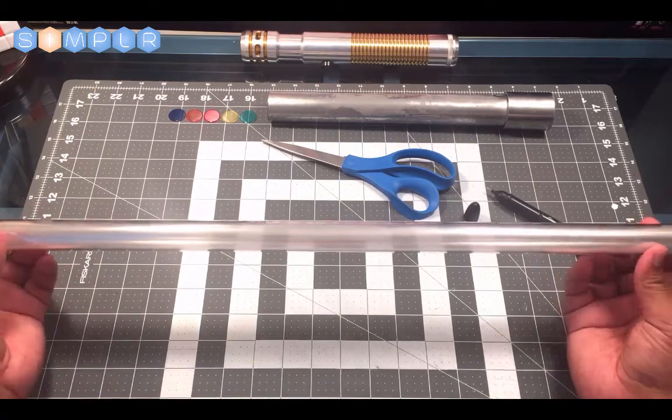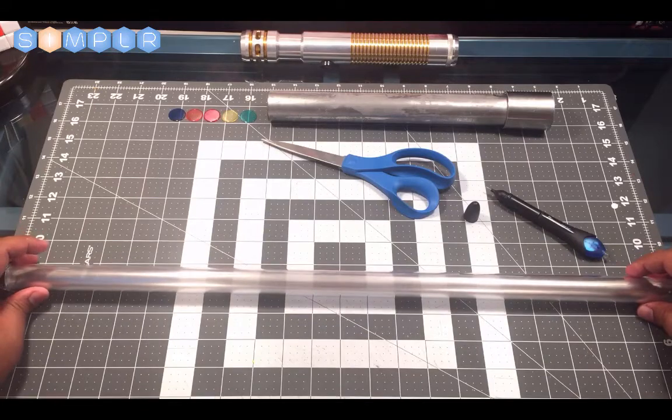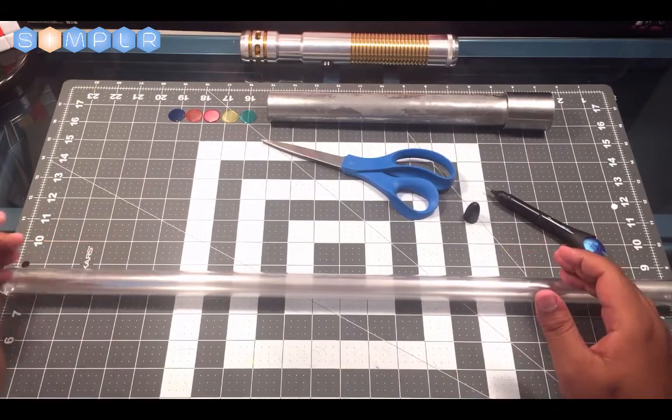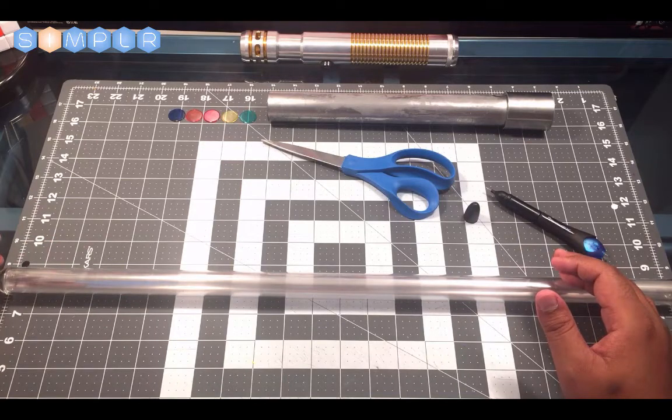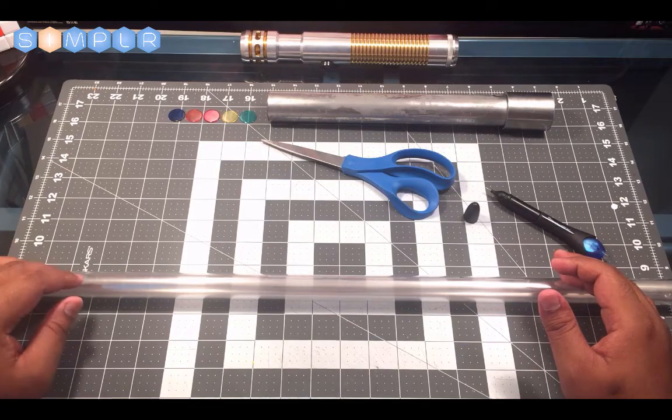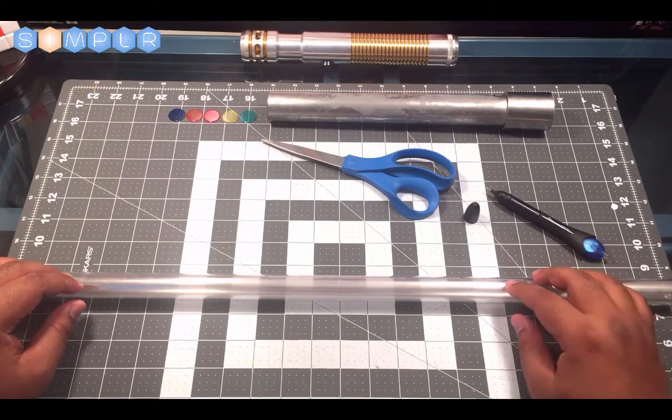Now in the next video, we're going to put everything together—our light source, our hilt, and our blade—and we'll fire up our lightsaber so you can see how cool everything is once it's all put together. I'll see you in the next video.